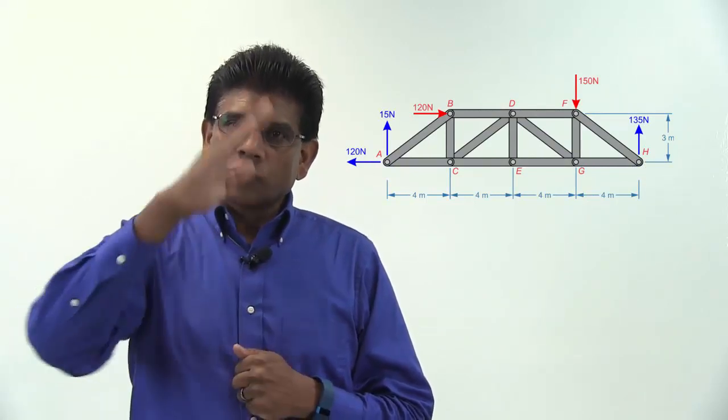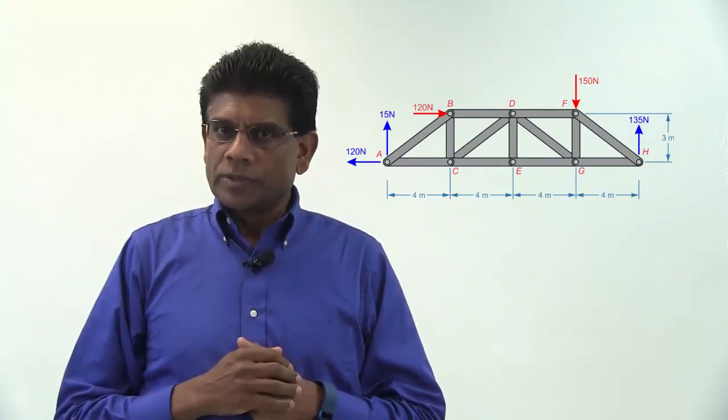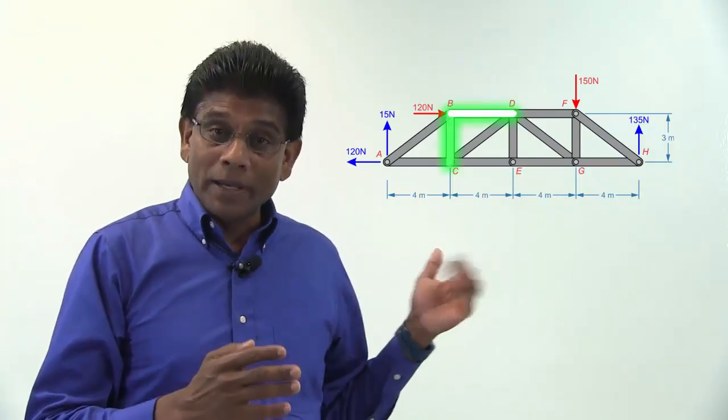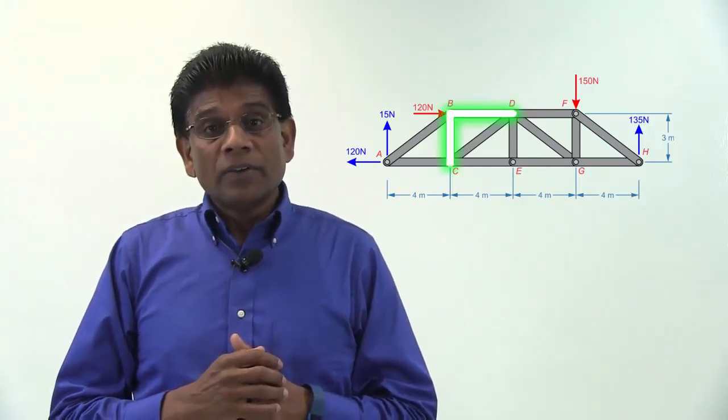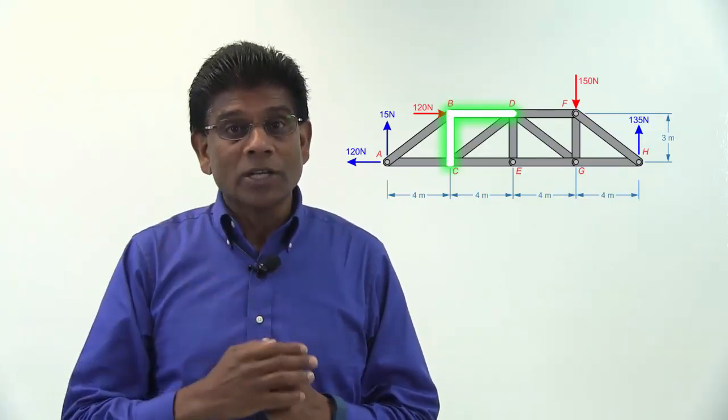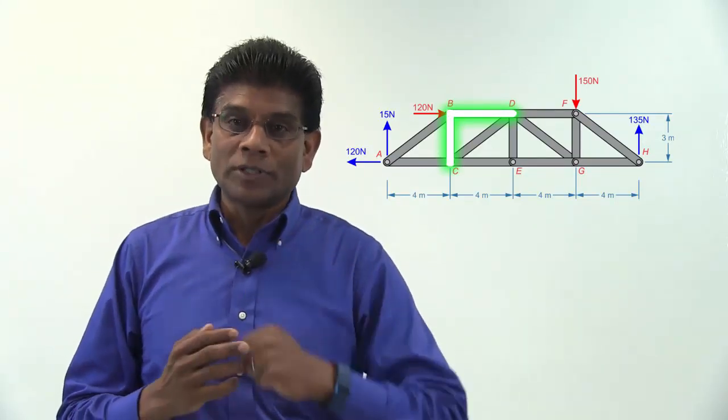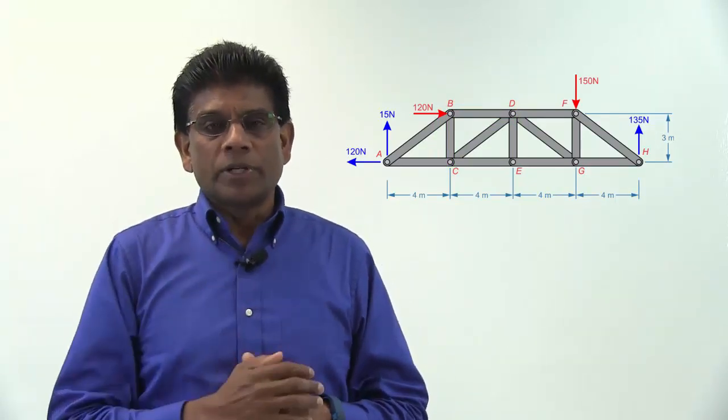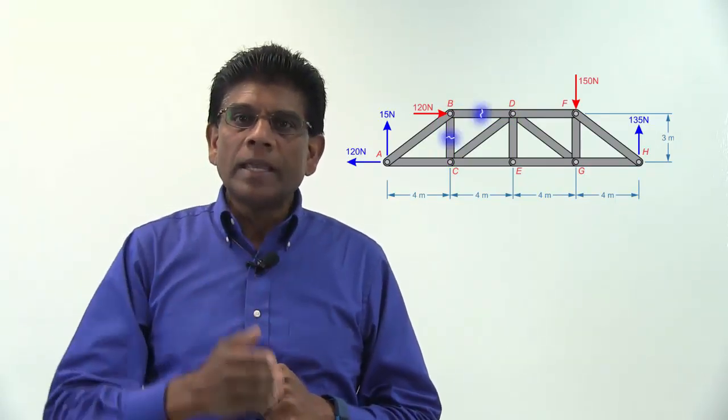Now, cut the structure through the members of interest. In our case, we are interested in members BD and BC. However, we can't actually split the structure into two sections by cutting through two members in this case. So I am going to cut through three members, BC, BD and AC.